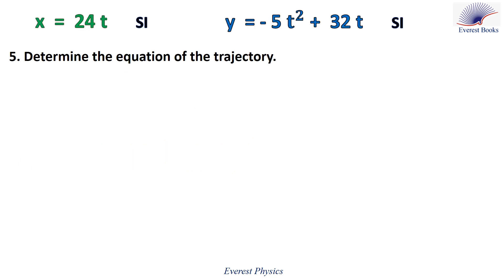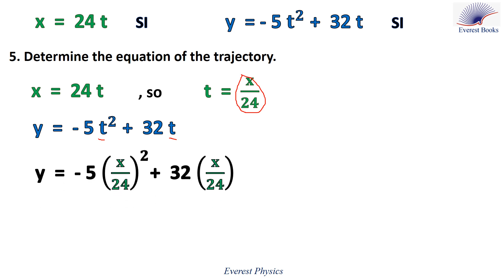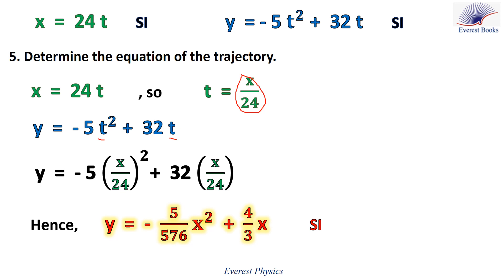Let's move to part 5: determine the equation of the trajectory. In order to determine the equation of the trajectory, we eliminate t between x and y. From x equals 24t, then t equals x over 24. Replacing t in the expression of y by x over 24 and rearranging gives us the trajectory equation of the ball.